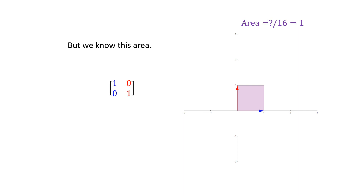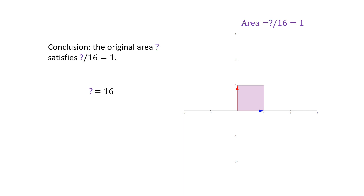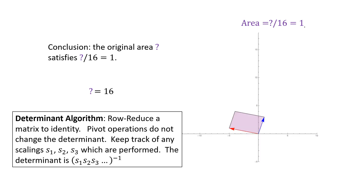So our unknown area divided by 16 — the amount that we multiplied before — is 1. That means that the determinant we were trying to find of the original transformation is 16. In conclusion, we have a determinant algorithm: you can row reduce a matrix to the identity. Pivot operations don't change the determinant, so just keep track of any scalings you do. The determinant is going to be the reciprocal of any scaling factors that you used, multiplied together.